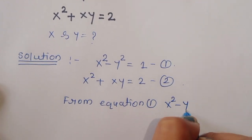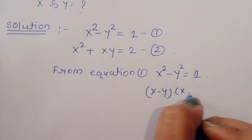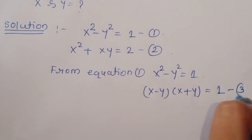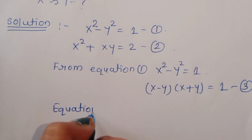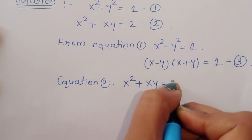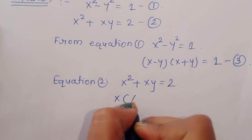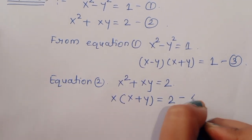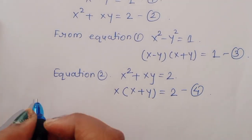From equation 1, x squared minus y squared equals 1, we can write this as (x minus y)(x plus y) equals 1 — this is equation 3. From equation 2, x squared plus xy equals 2, taking x common, we get x(x plus y) equals 2 — this is equation 4.